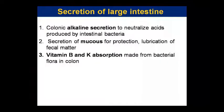Now let's cover secretion from the large intestine after the small intestine, to complete all GI secretions. The large intestine produces colonic alkaline secretion. Bacterial flora in the colon produces acid and enables vitamin B and K absorption. With this, GI secretion is completed.